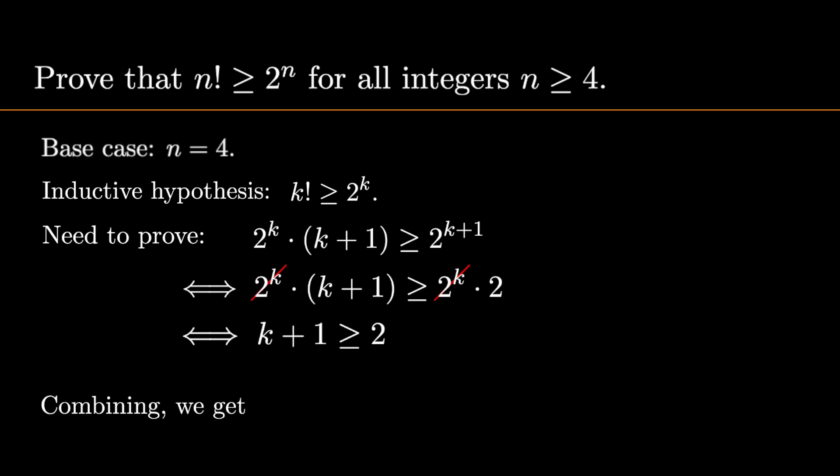Finally, we can combine this with what we already know to get a composite of two inequalities. k plus 1 factorial is greater than or equal to 2 to the power of k times k plus 1, which is in turn greater than or equal to 2 to the power of k plus 1.